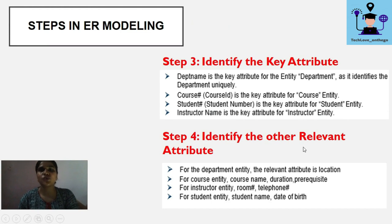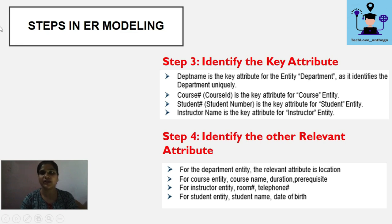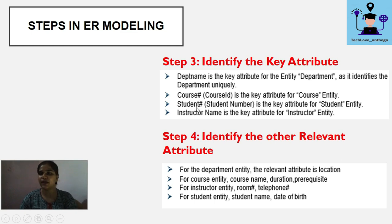The next step is to identify key attributes — a particular attribute or set of attributes that can uniquely identify a particular entity from the entity set. For Department, the key attribute is department name. For Course, the key attribute is course ID. For Student, the key attribute is student number. For Instructor, the key attribute is instructor name.